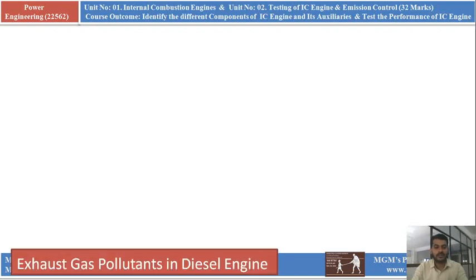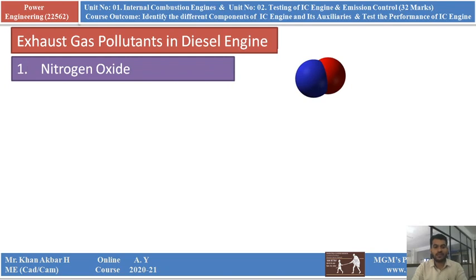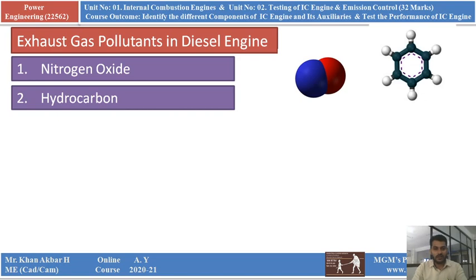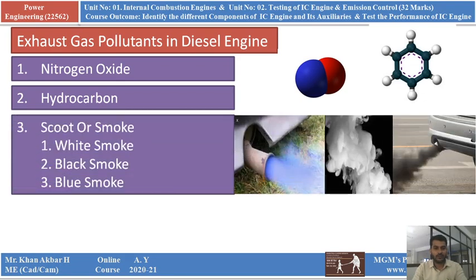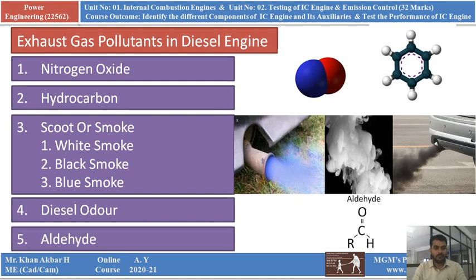Pollutants in exhaust gas of a diesel engine. The first exhaust gas pollutant is nitrogen oxide. Second is hydrocarbon. Third is the soot, or smoke — there are three types: white smoke, black smoke, and blue smoke. Fourth is diesel odor and number five is aldehyde. These are the exhaust gas pollutants available in the diesel engine.